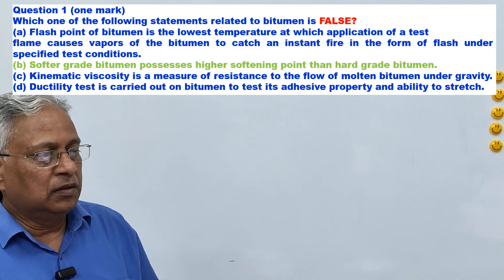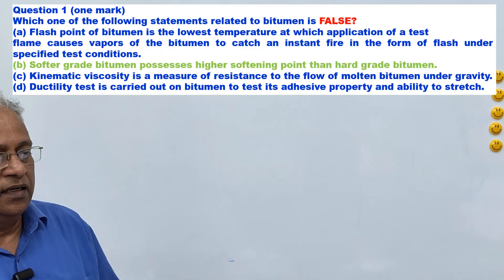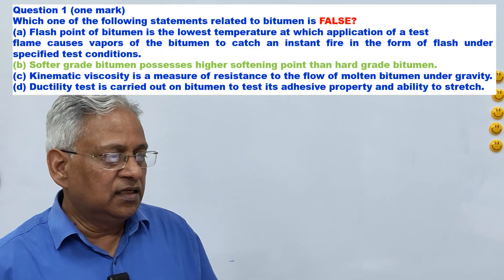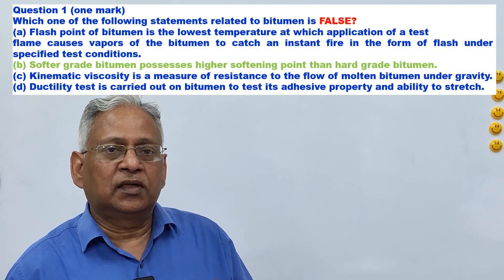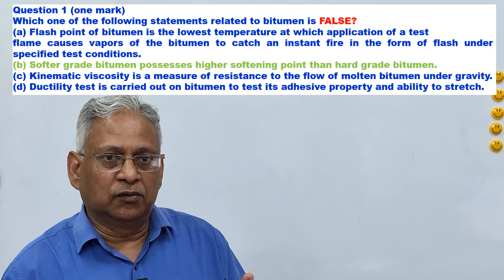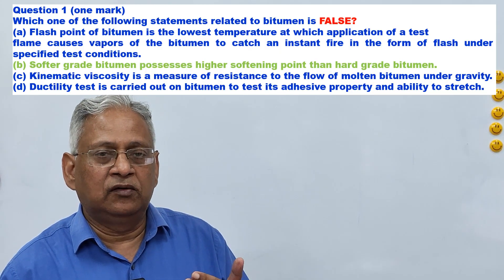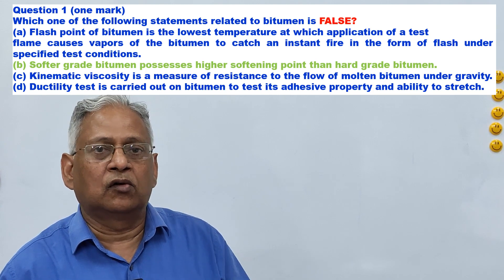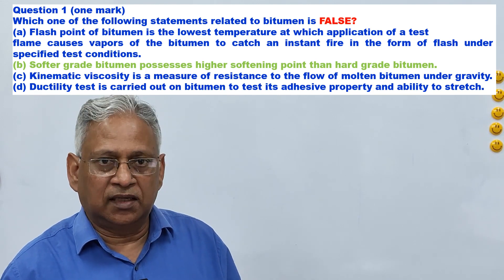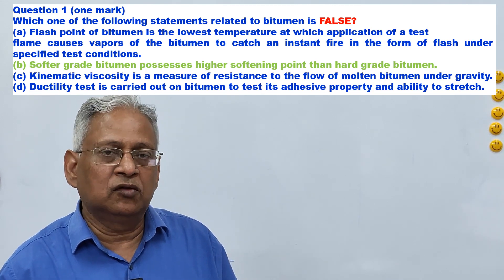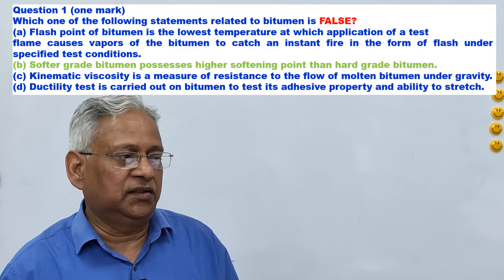The second statement is: softer grade bitumen possesses higher softening point than hard grade bitumen. This is not correct because softer bitumen means high penetration value, and high penetration value means low softening point. Therefore this statement is false — softer grade bitumen will have a low softening point.